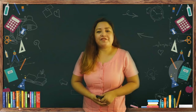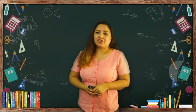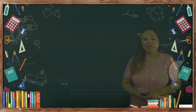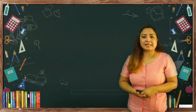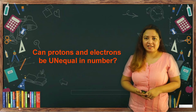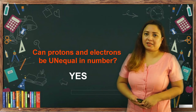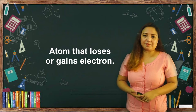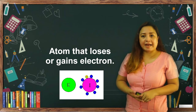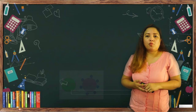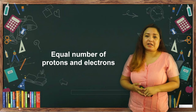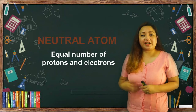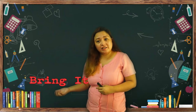Very good! If you were not able to get all the answers correctly, don't worry — just review this video and try to answer the exercise again. Based on our activity, is it possible for an atom to have an unequal number of protons and electrons? Yes, it is possible. If you used the PhET simulation, you can clearly see that atoms can lose or gain electrons. When this happens, the atom becomes an ion. Once the number of protons and electrons becomes equal again, you get your neutral atom.